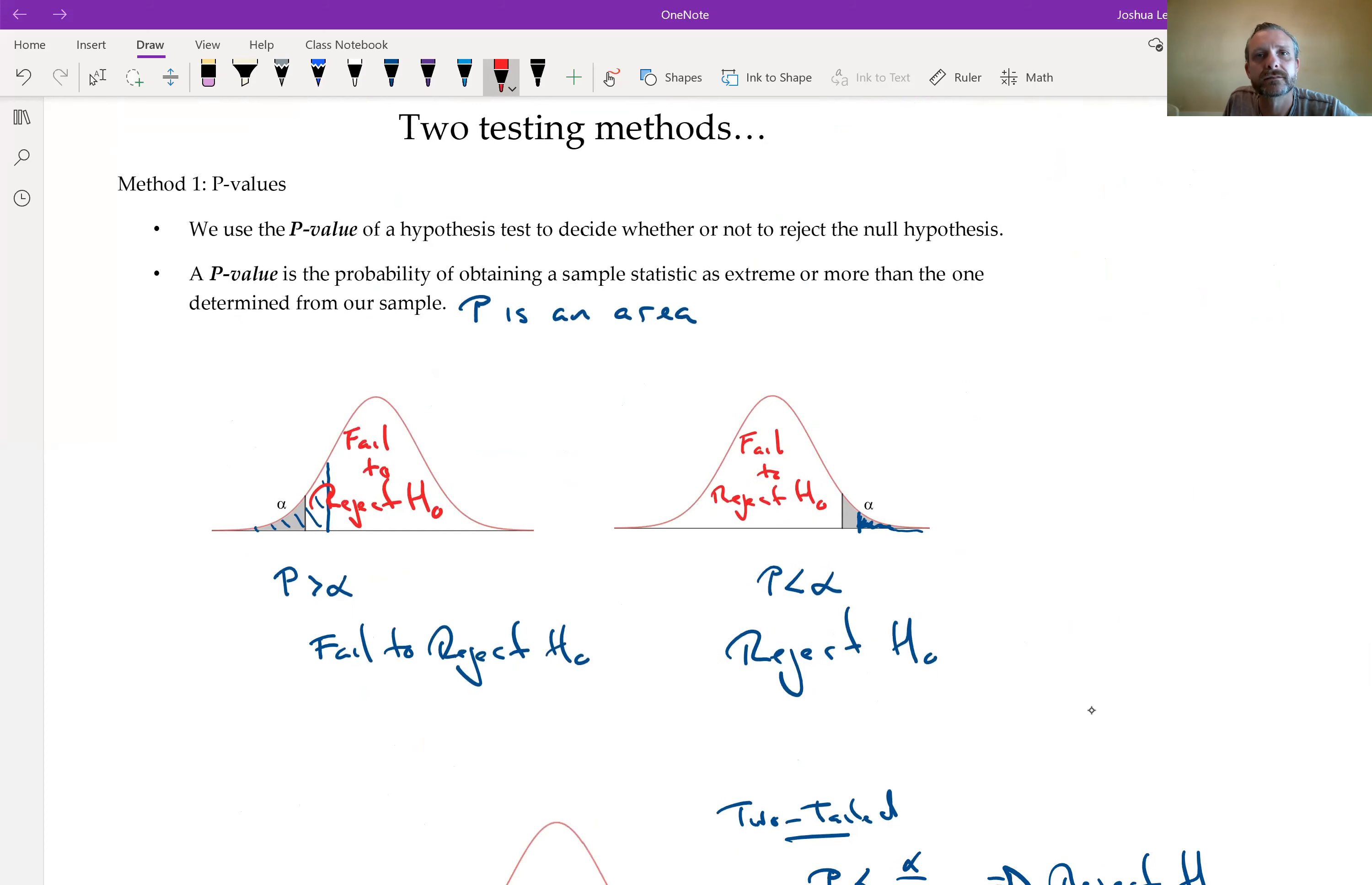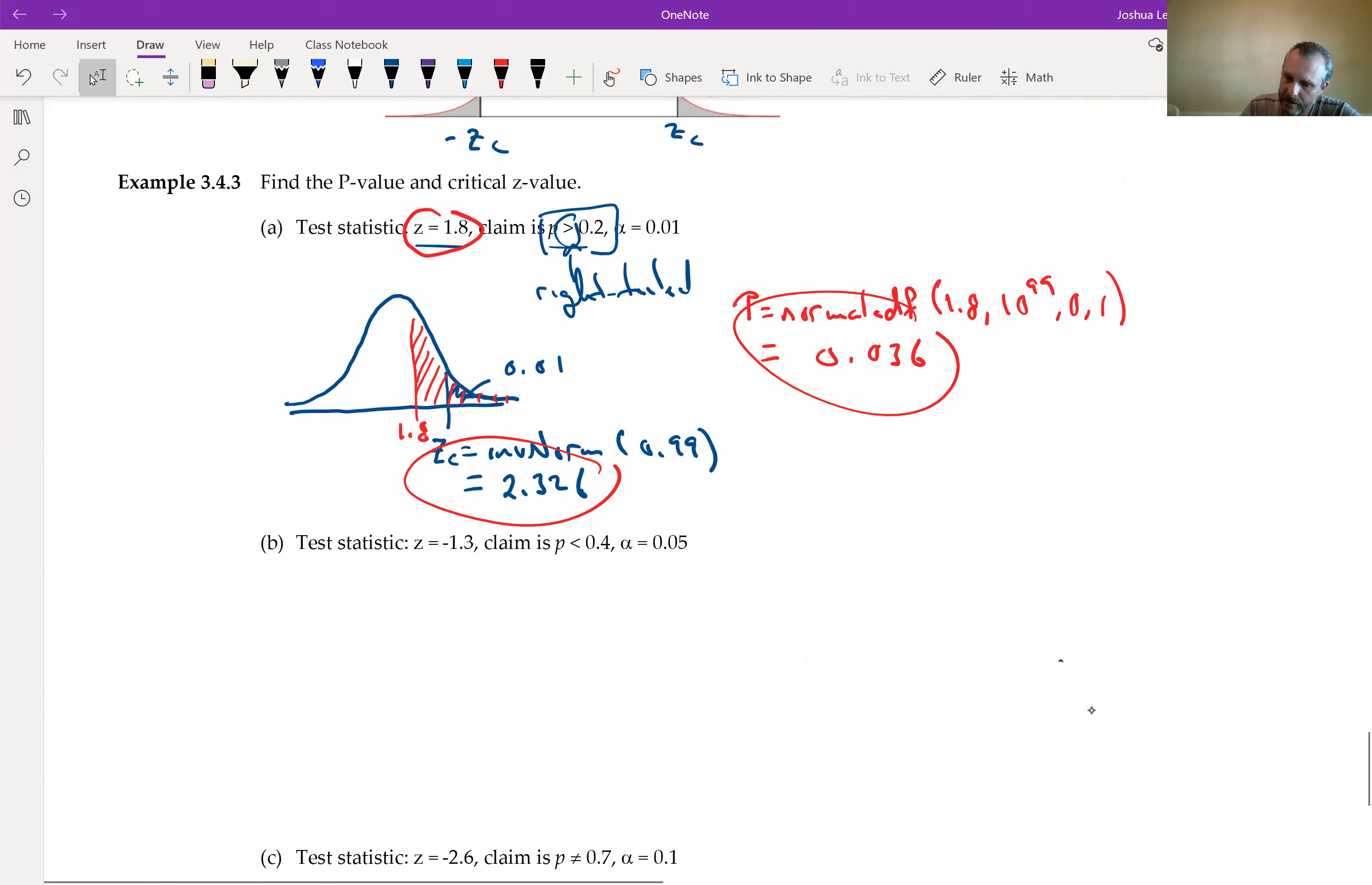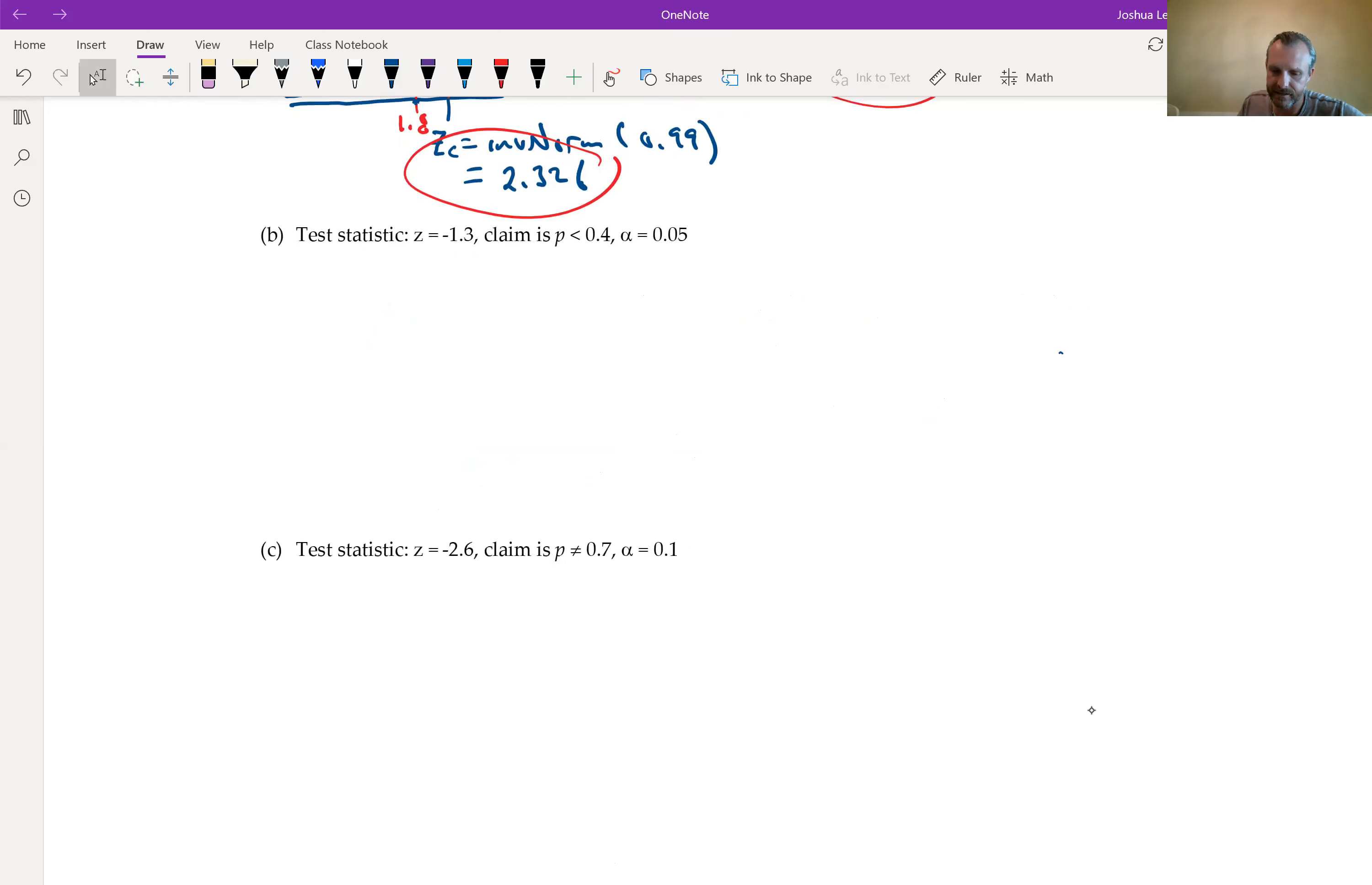Now, my test statistic is 1.8. Well, that's over here somewhere. My P then - remember, P and alpha, you compare area with area. Notice that my P is going to be greater than alpha. So P is going to be that area to the right of 1.8. We do normal CDF. The lower is 1.8. The upper, I'll call it 10 to 99. And we get 0.036. I want you to notice something. This P is certainly greater than alpha. We fail to reject. And remember how I said that alpha creates two different regions?